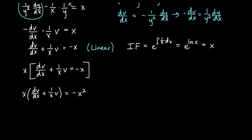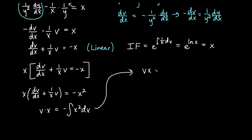Multiplying out on the right side gives negative x squared. Taking the antiderivative with respect to x on both sides: the left side becomes v times x, and the right side requires integrating negative x squared dx. That gives us v times x equals negative one-third x cubed plus C. Dividing both sides by x, we get v equals negative one-third x squared plus C over x.